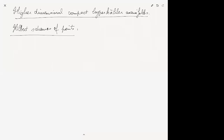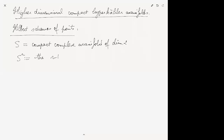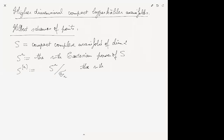How does this work? We start with a compact complex manifold of dimension two — a compact complex surface S. I'll denote S^r for the rth Cartesian power, and S^(r) for the rth symmetric power, which is S^r modulo the action of the symmetric group S_r. So this is the rth symmetric power.